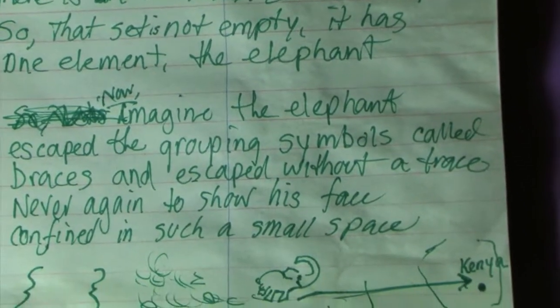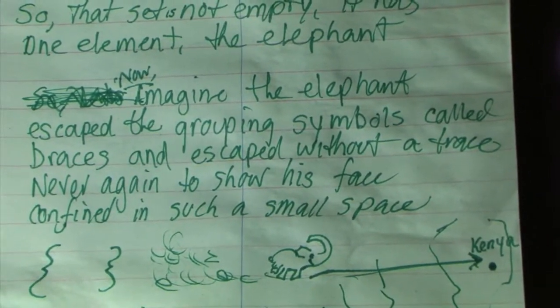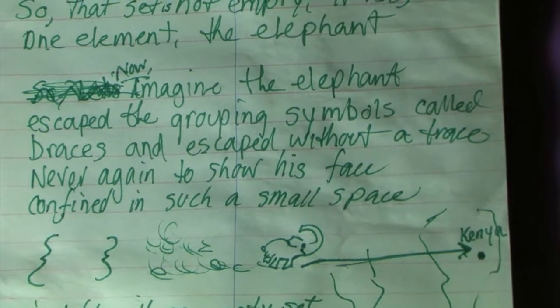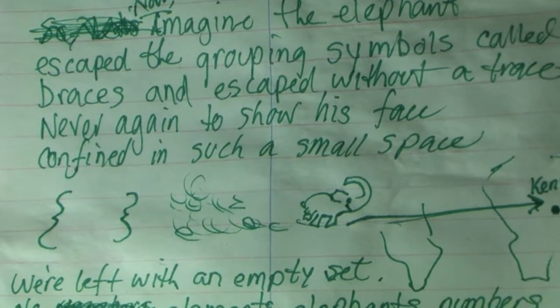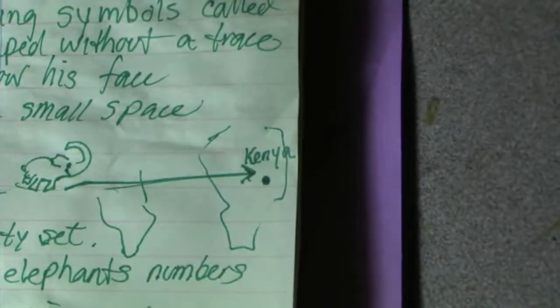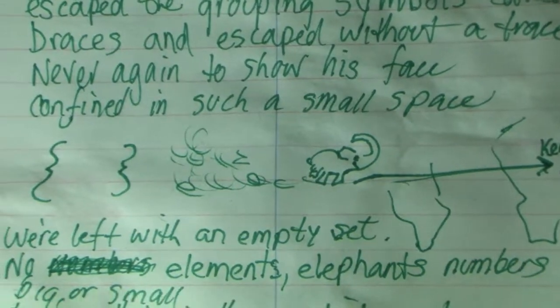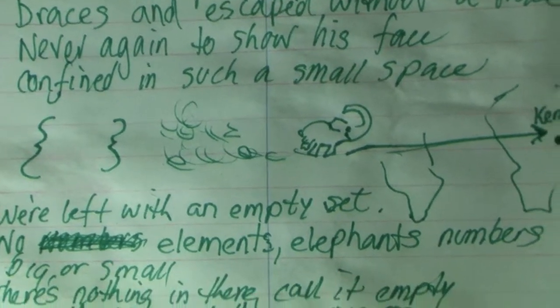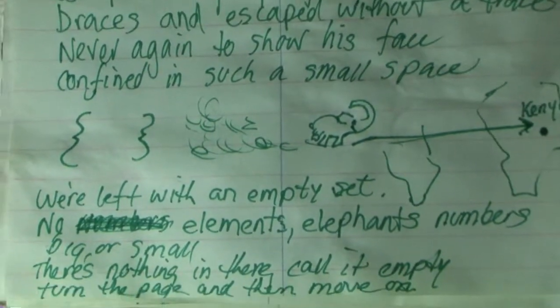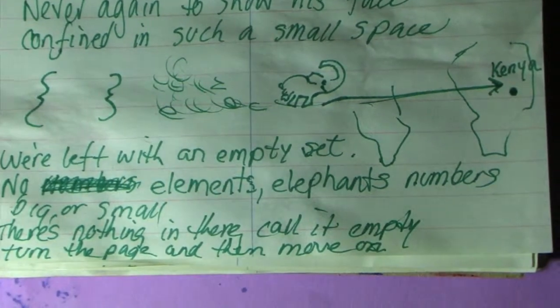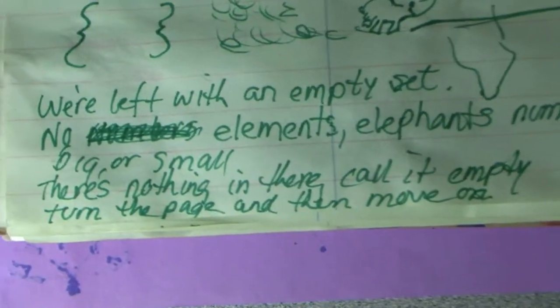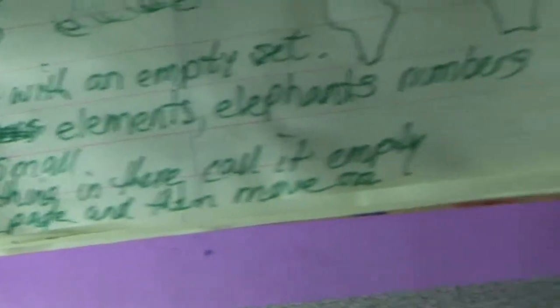Imagine the elephant escaped the grouping symbols called braces. Never again to show his face, confined in such a small space. We're left with an empty set. No elements, elephants, numbers big or small. There's nothing in there. Call it empty. Turn the page and move on.